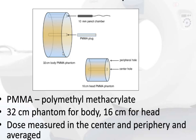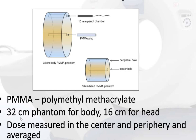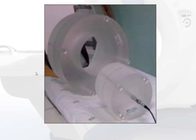The phantoms used for QA by CT techs and physicists are made out of PMMA, or polymethylmethacrylate. The 32 cm phantom is used for body scans and the 16 cm phantom is used for head CTs. Dose is measured in the center and periphery and averaged; dose in the periphery is higher than in the center. Here is also the pencil ionization chamber.